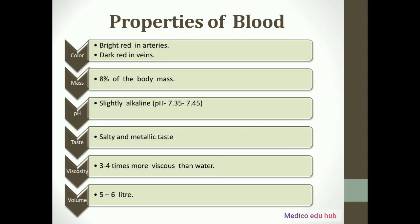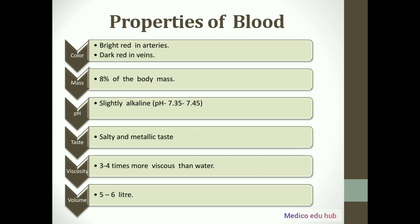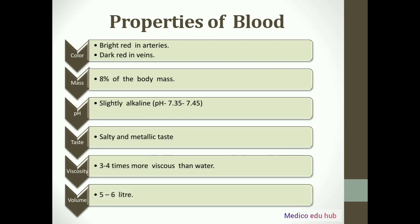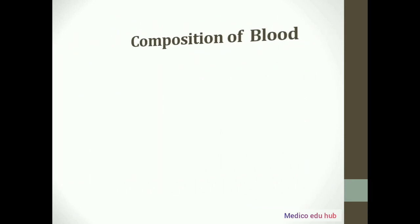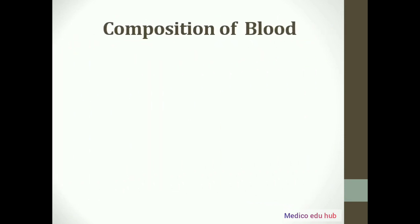And the metallic taste of blood is because blood contains iron. Next is viscosity — blood is 3 to 4 times more viscous than water. And lastly, the volume of blood is 5 to 6 liters.